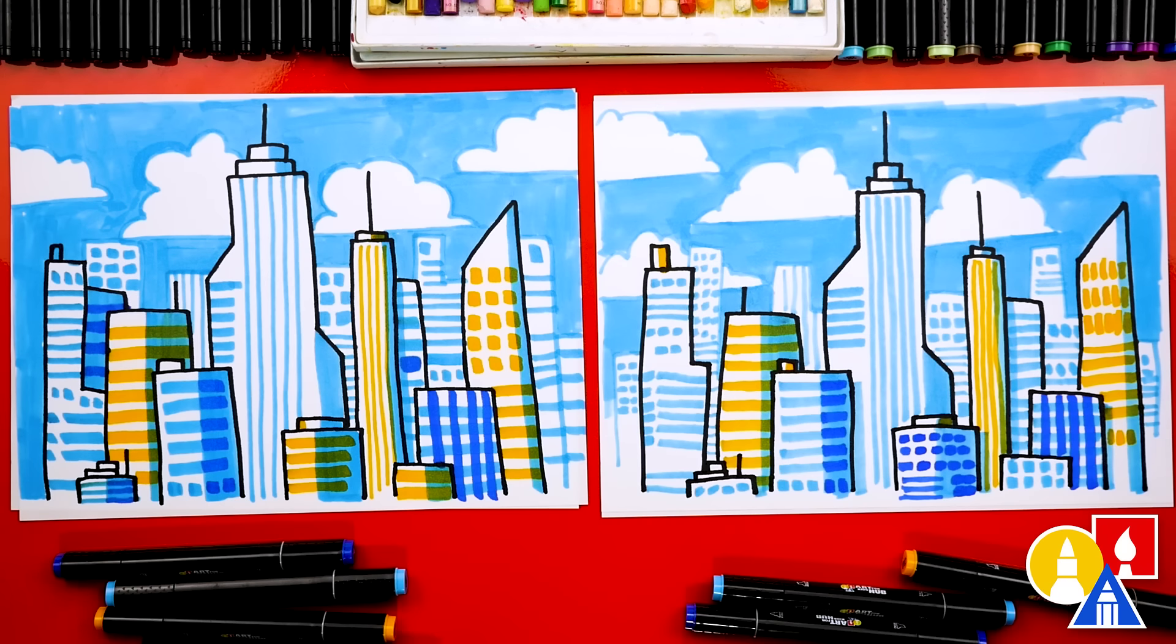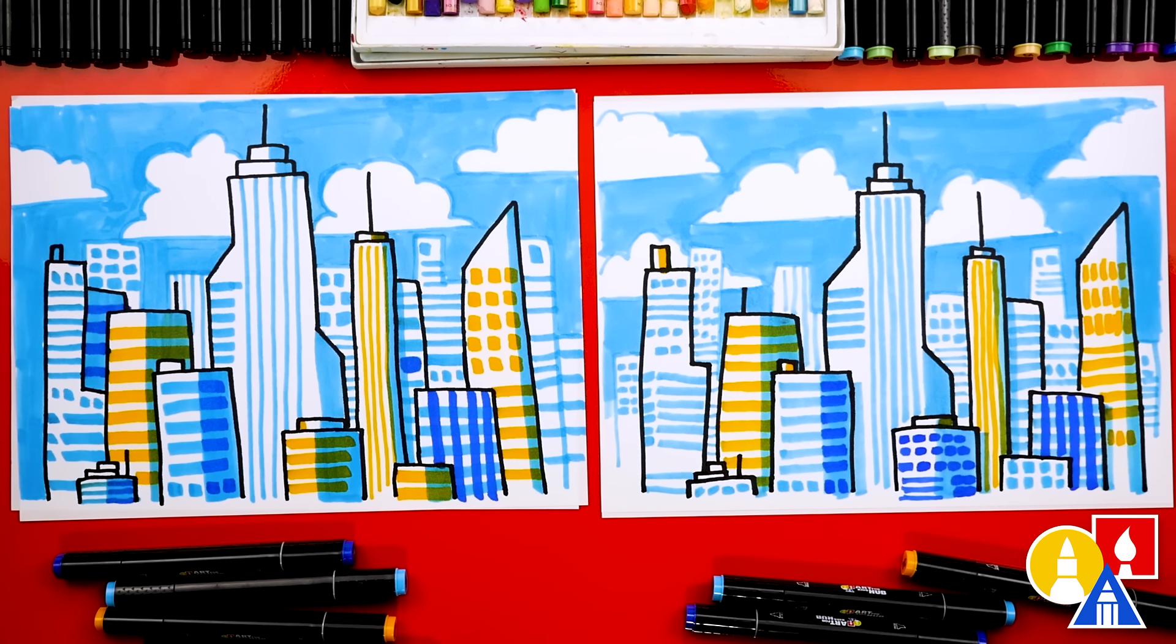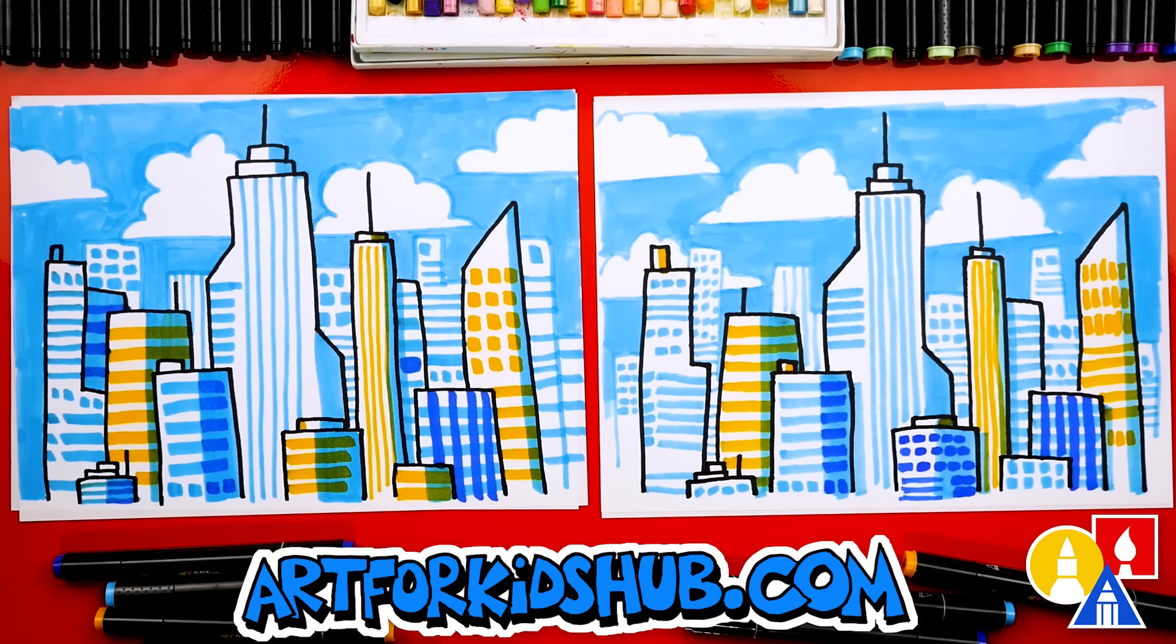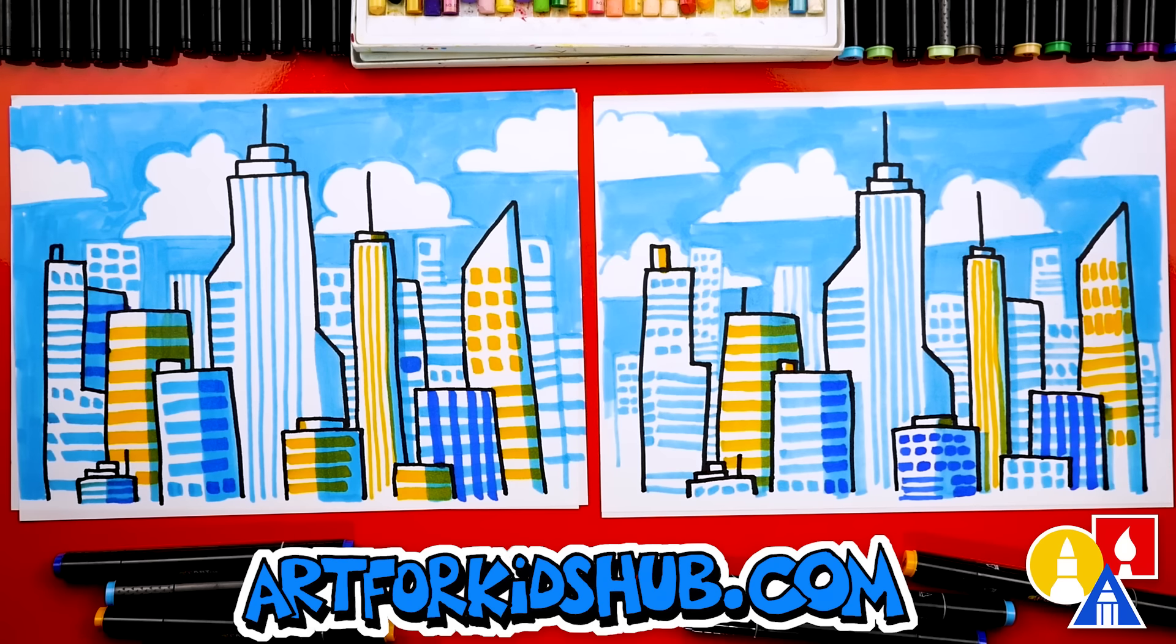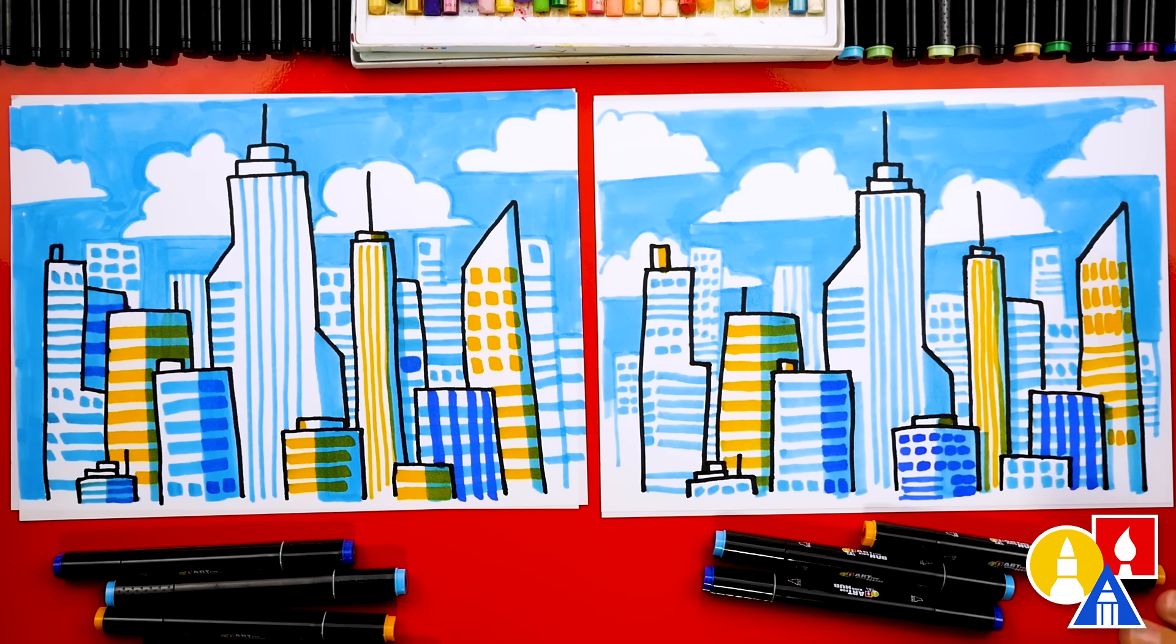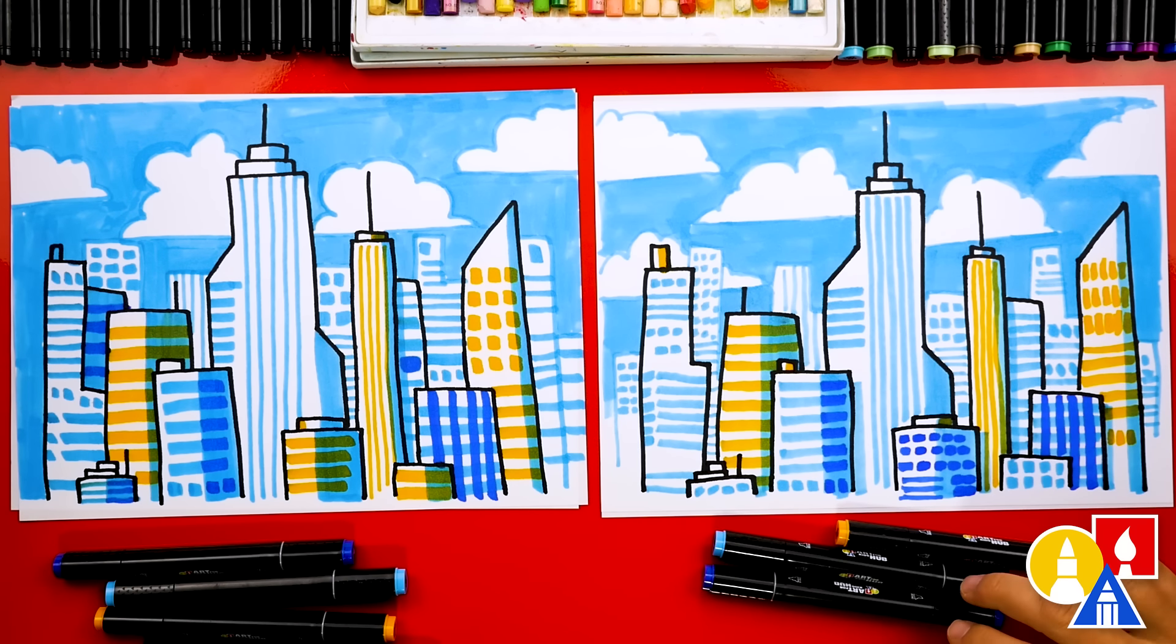We did it. We finished drawing and coloring our cityscapes and they turned out so cool. I say this every time, but this is my new favorite lesson. Maybe it's one of your favorites. I hope our friends will take time to color their drawings. You guys can pause the video right now to match our same coloring or just use it as inspiration. I also love that we just used three colors, our orange and two blues, but you could also color yours any way you want. You could use lots of colors.